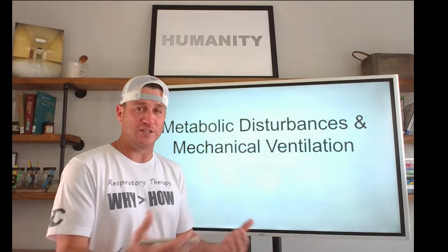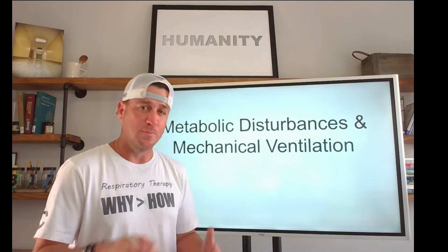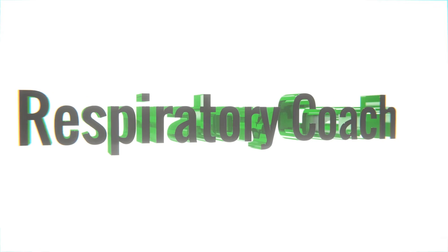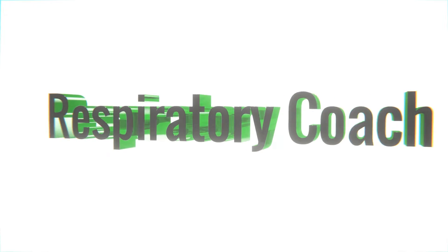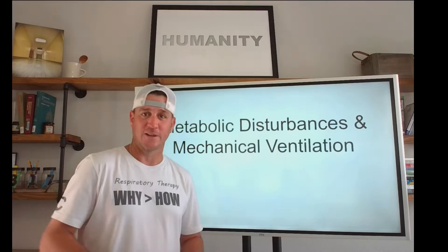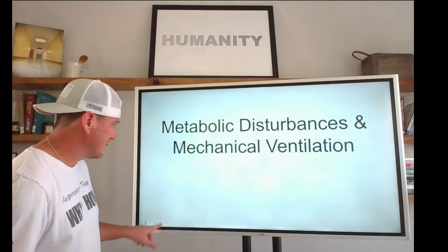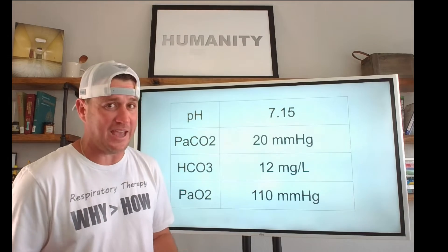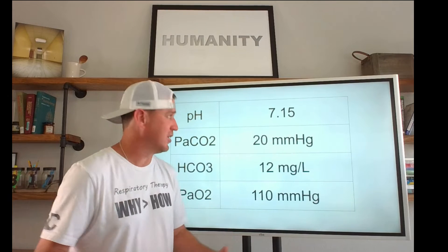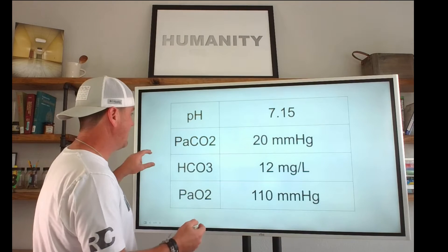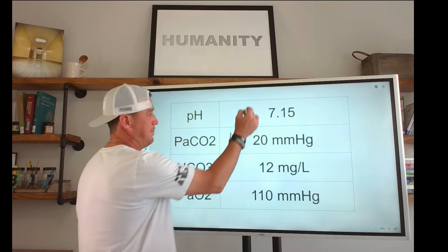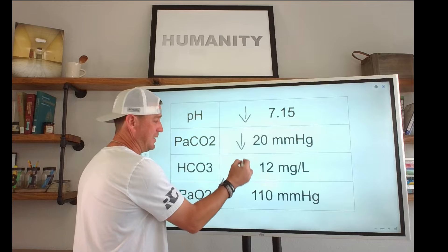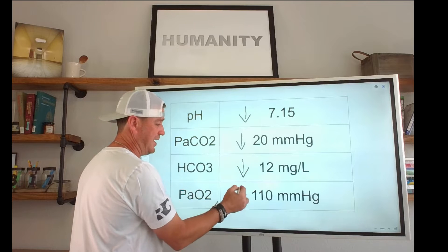We're real good when it's a respiratory disturbance and knowing what to do, but what about when it's a metabolic disturbance? We're going to start by looking at an arterial blood gas and deciphering what exactly is the problem. What we see here is that we have an acidotic pH — so our pH is down, our CO2 is down, our bicarb is also down, and our PaO2 is elevated.